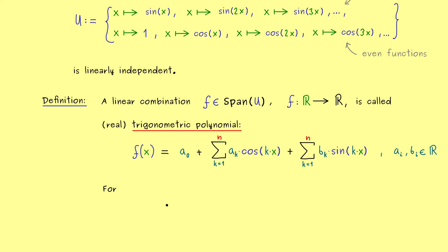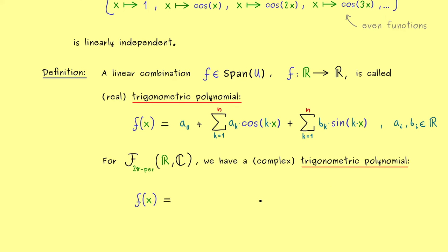But before we do that, I also want to show you that we have a complex trigonometric polynomial as well. This means that now we have to consider the complex vector space of the 2π-periodic functions. And then obviously not a lot changes—we can just say that we have a complex trigonometric polynomial. The only thing we have to do is to allow for complex scalars here in this equation.